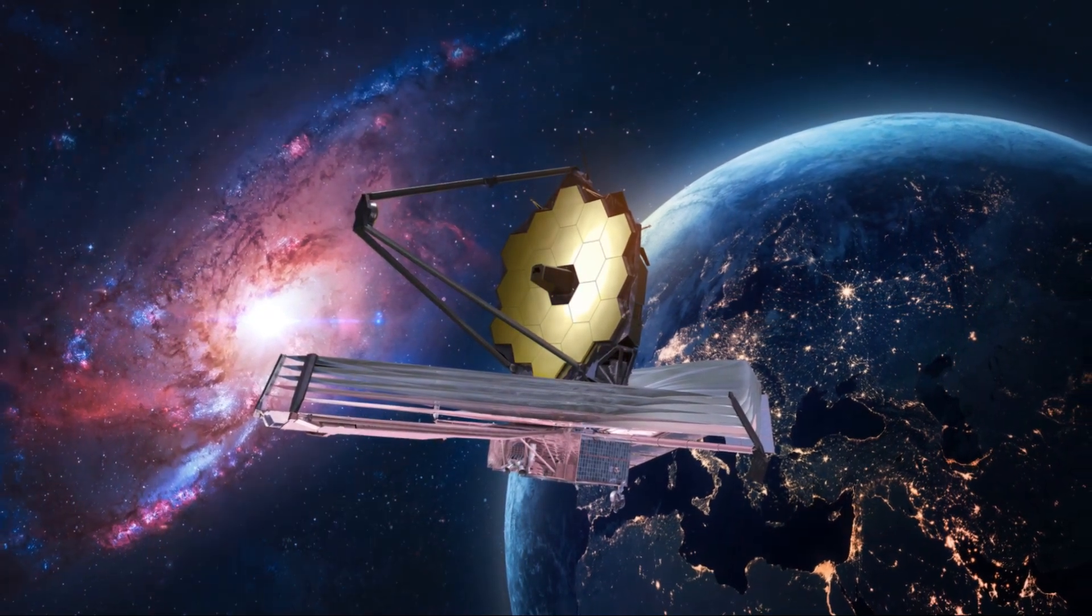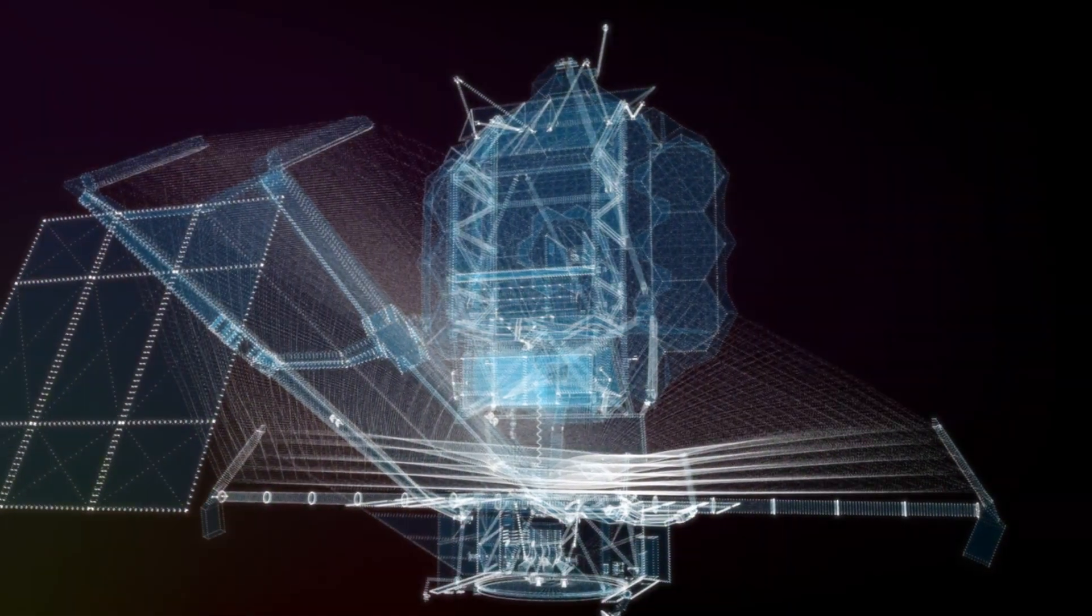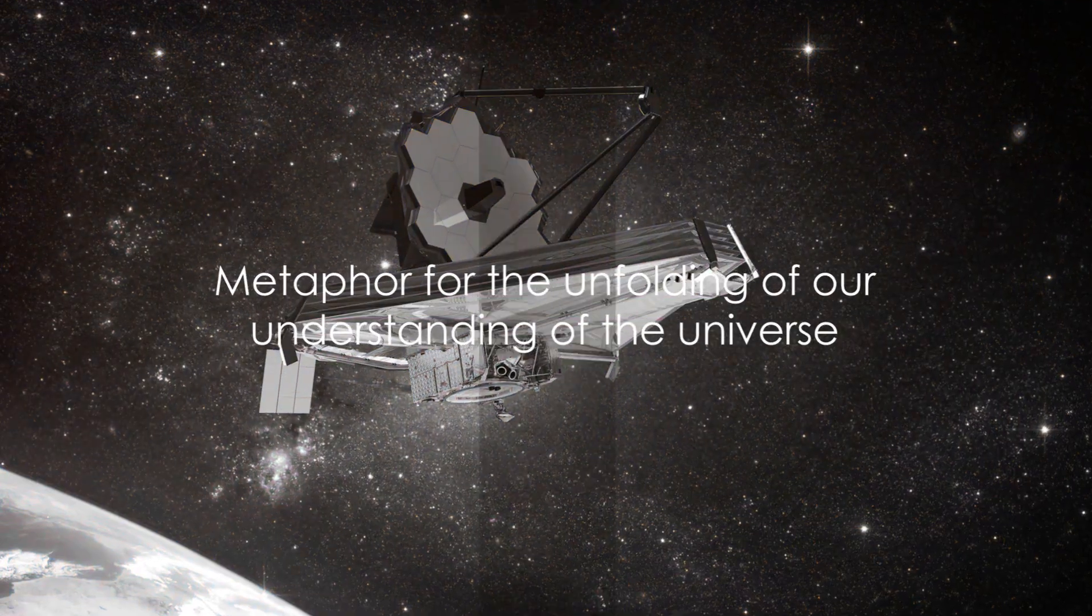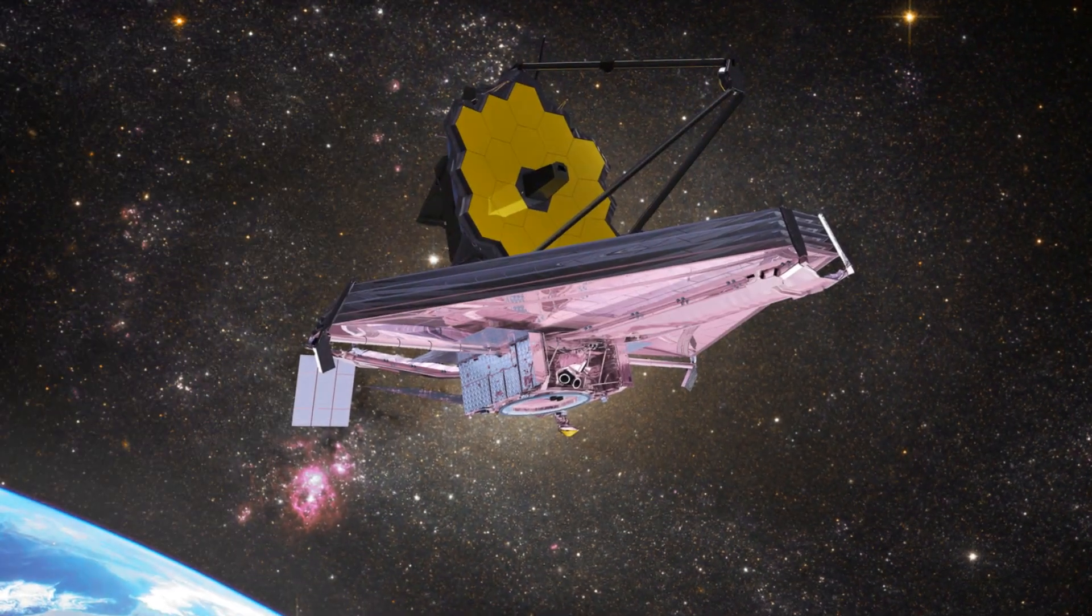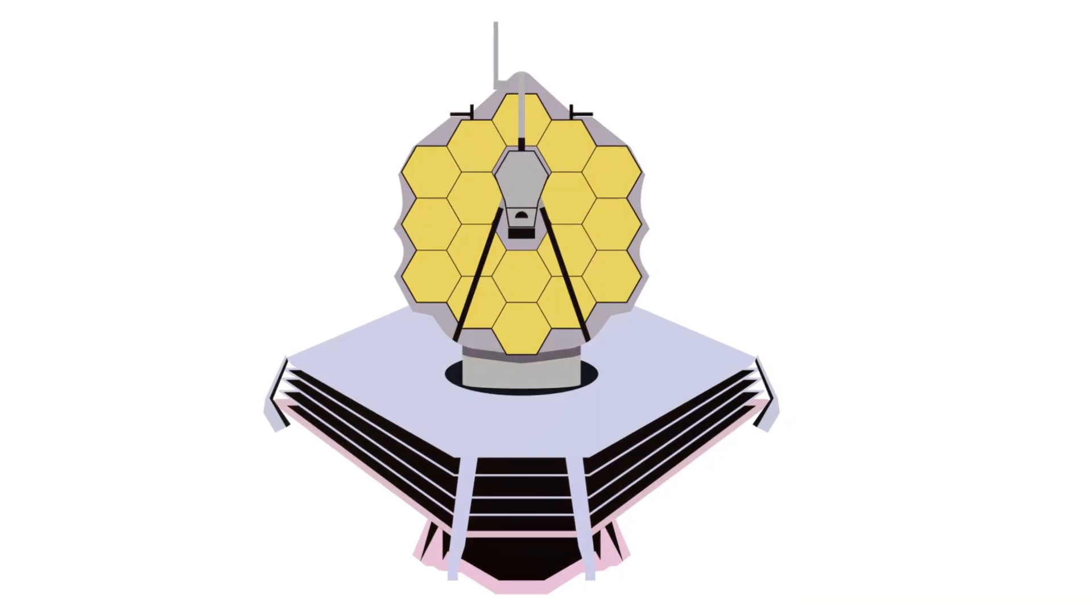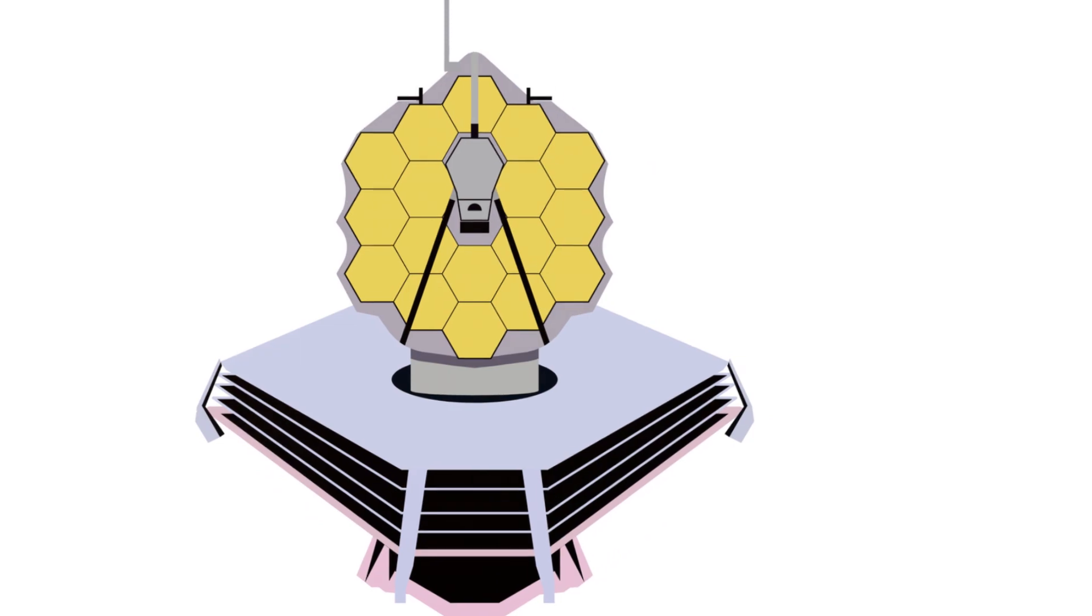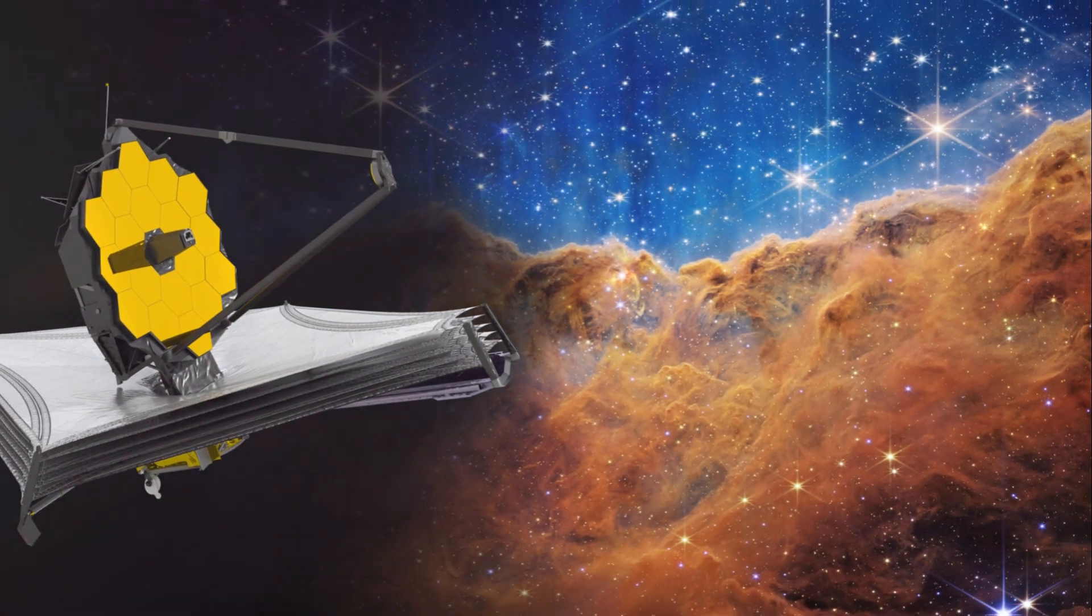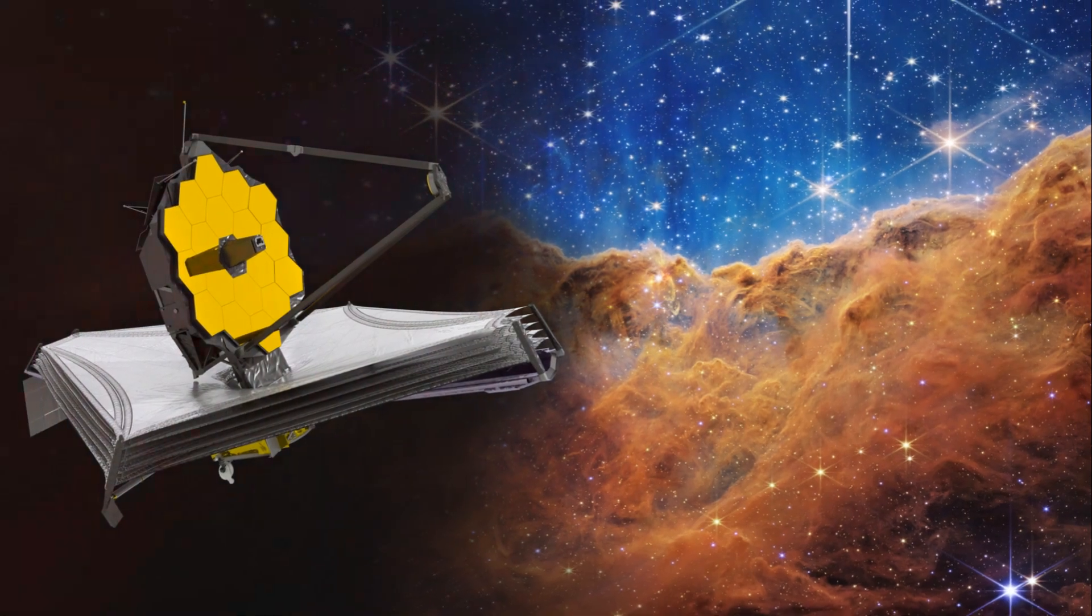And finally, the mirrors, the heart of the JWST. They unfolded like a beautiful cosmic origami. This process of unfolding was not just about physical transformation. It was a metaphor for the unfolding of our understanding of the universe. Each piece that unfolded, each successful step, brought us closer to the mysteries we aim to unravel.